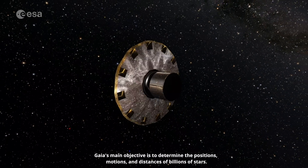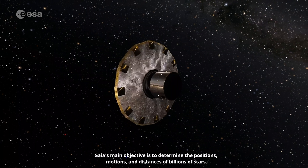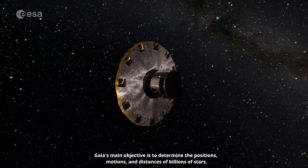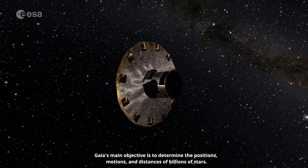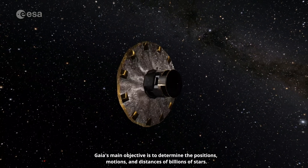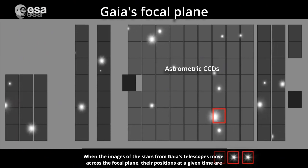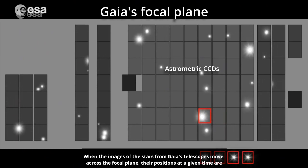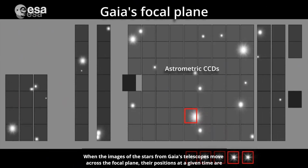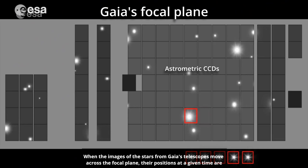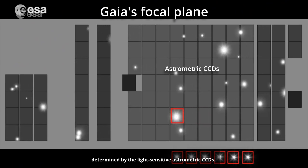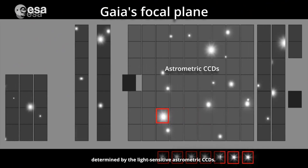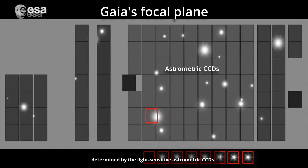Gaia's main objective is to determine the positions, motions and distances of billions of stars. When the images of the stars from Gaia's telescopes move across the focal plane, their positions at a given time are determined by the light-sensitive astrometric CCDs.